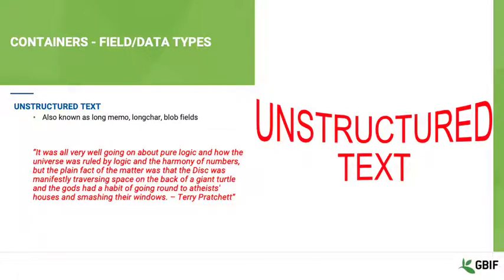Another type of text field that you will come across is the unstructured text field, also known as memo, long char or blob fields. These types of fields are used to hold large amounts of unformatted text and, unlike alphanumeric fields, may not have an obvious character limit. In simple systems, they are generally less flexible in terms of processing, for example sorting and indexing. With decreased storage costs and the rise of NoSQL document-oriented database programs such as MongoDB, however, this is changing.